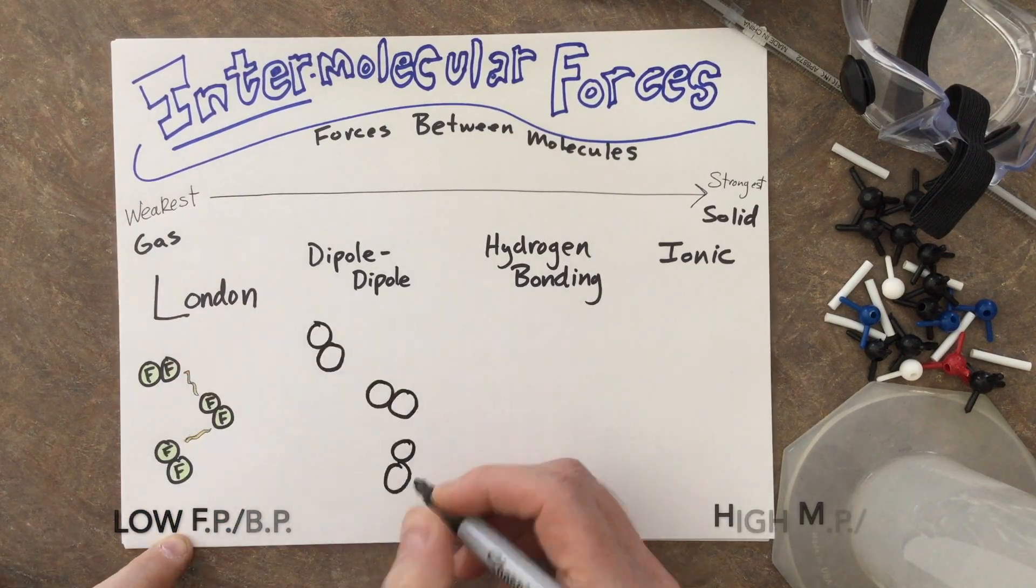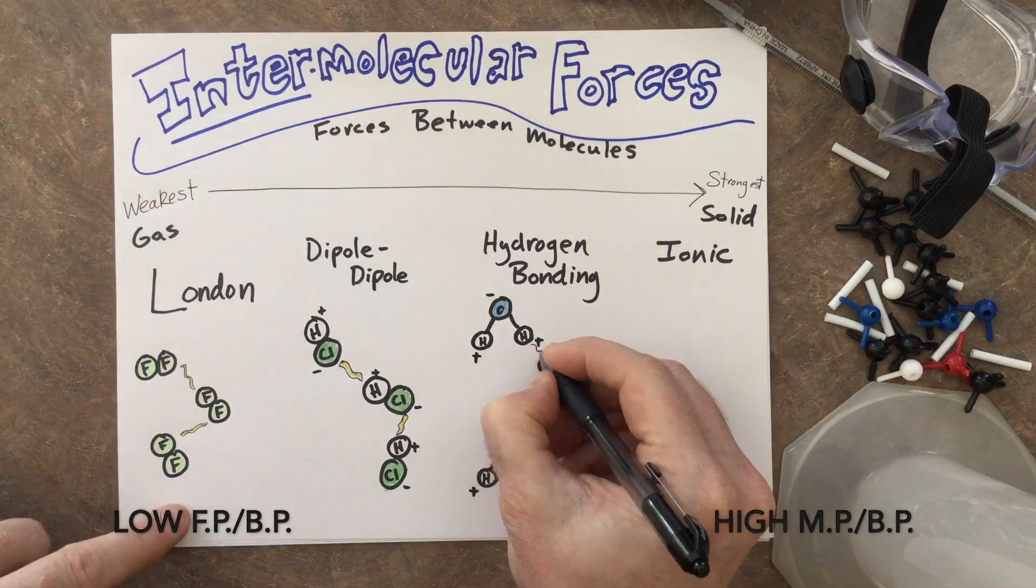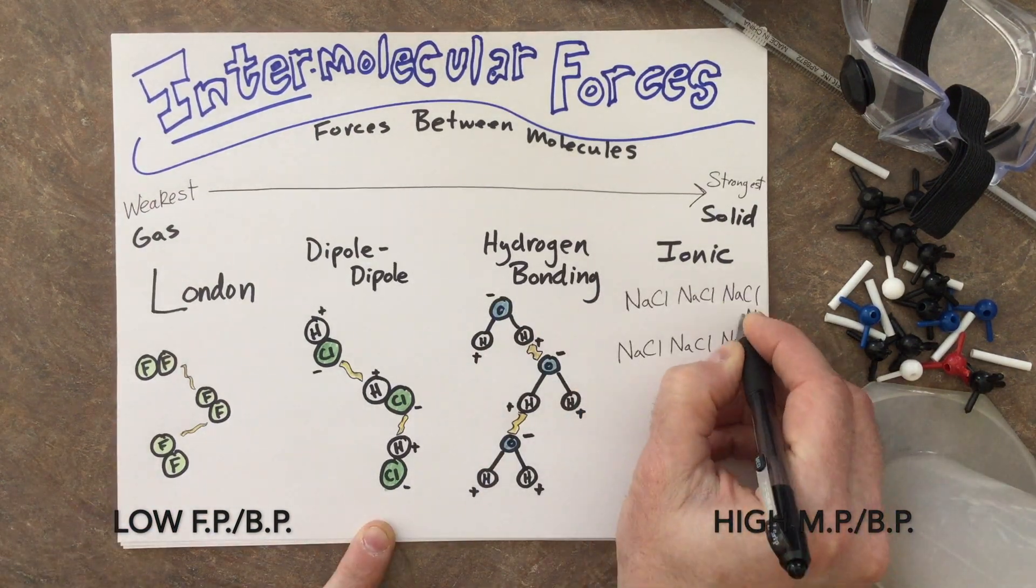So to recap, here are the four types of intermolecular forces again on a spectrum and the trends that we find as we move from weakest to strongest, left to right.